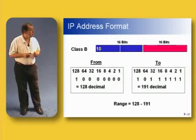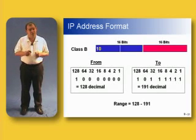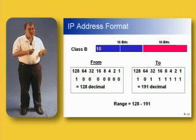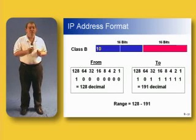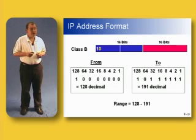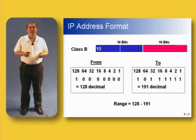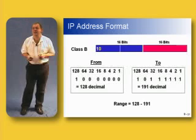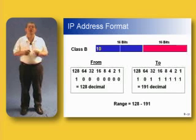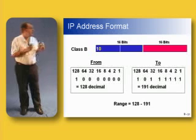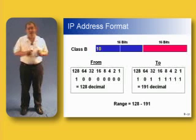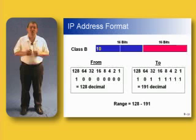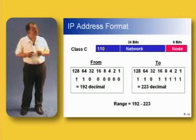How about class B? With class B, the first two bits are set in stone — the first bit must be a one and the second bit is zero. So the first octet ranges from one-zero followed by six zeros — which converts to 128 decimal — all the way up to one-zero followed by six ones. Everything in between is an available class B address. Converting to decimal, that gives a range of 128 to 191. So when we look at an IP address and the first octet is between 128 and 191, it's a class B address, meaning the first 16 bits are network and the last 16 bits are host space.